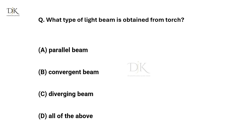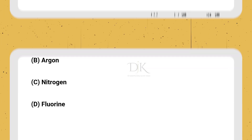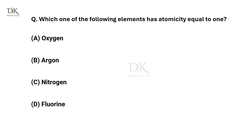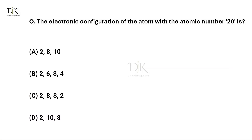What type of light beam is obtained from a torch? The right answer is Diverging beam. Which one of the following elements has atomicity equal to 1? The right answer is Argon. The electronic configuration of the atom with atomic number 20 is? The right answer is 2, 8, 8, 2.